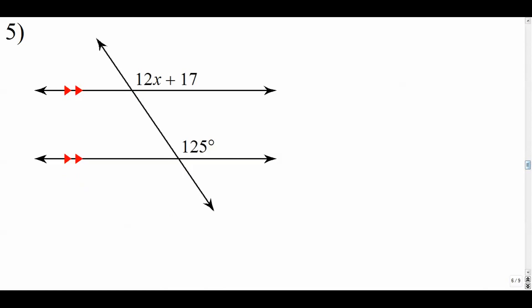Number five. All right, let's identify the relationship. We have an angle here and an angle here. These are on the same side of our transversal and they're both above the parallel lines. Those are in the same spot. Angles that are in the same spot correspond. So we'll call them corresponding angles. We know that corresponding angles are congruent. So 12x plus 17 is equal to 125 degrees.